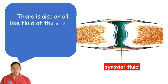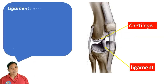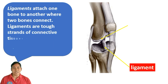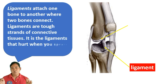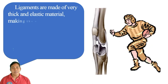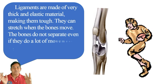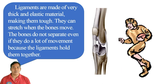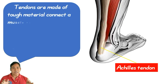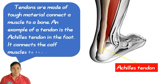There is also an oil-like fluid at the end of the bones called synovial fluid that lubricates bone joints. Ligaments attach one bone to another where two bones connect — they are tough strands of connective tissue. It is the ligaments that hurt when you sprain an ankle. Ligaments are made of very thick and elastic material, holding bones together even during a lot of movement. Tendons are tough materials that connect a muscle to a bone. An example is the Achilles tendon in the foot, which connects the calf muscles to the heel bone.